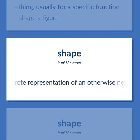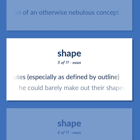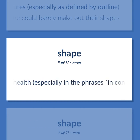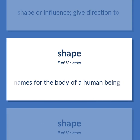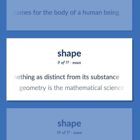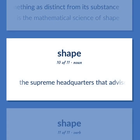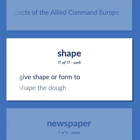Shape. A concrete representation of an otherwise nebulous concept. Any spatial attributes, especially as defined by outline — he could barely make out their shapes. The state of good health, especially in the phrases: in condition, in shape, out of condition, out of shape. Shape or influence; give direction to. Alternative names for the body of a human being. The spatial arrangement of something is distinct from its substance — geometry is the mathematical science of shape. Give shape or form to — shape the dough.